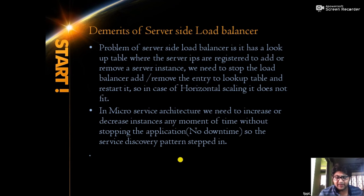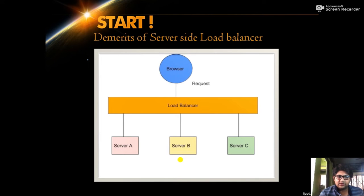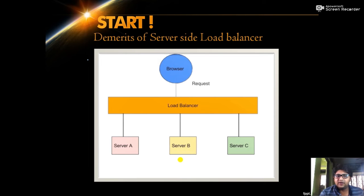In the traditional load balancer, a browser request first interacts with the load balancer, which uses an algorithm to identify the server with the least load and forwards the request there. But if server B is down and the load balancer still identifies it as having less load and forwards the request to it, you get a failure. The load balancer cannot remove that server instance from its table at runtime, so you can face intermittent failures — which is a very bad experience for users.